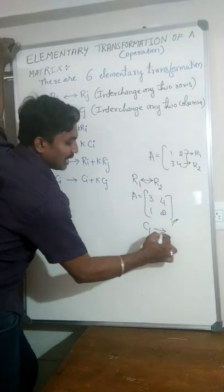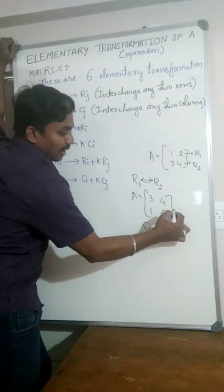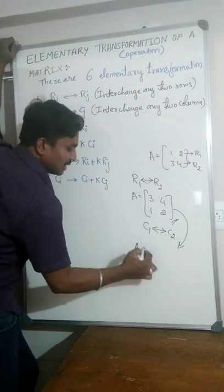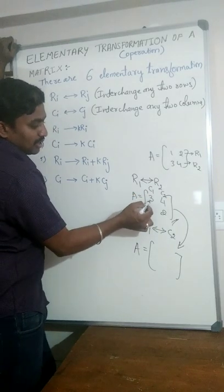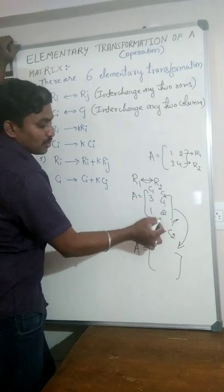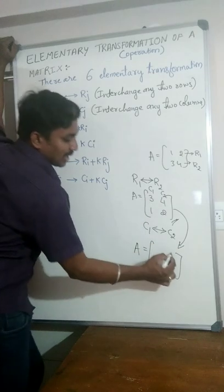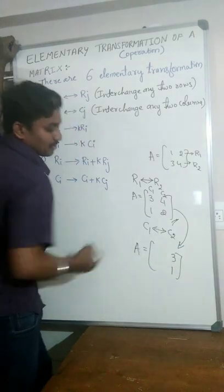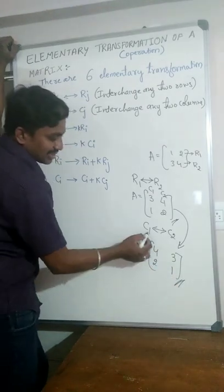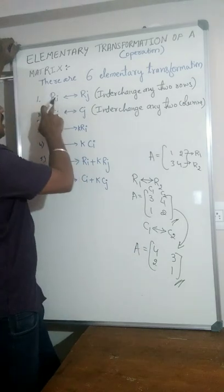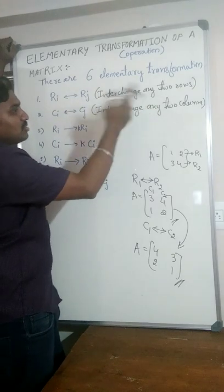Similarly, suppose C1 interchanges C2. If you apply this operation to the same matrix, column 1 elements are 3, 1 and column 2 elements are 4, 2. So C1 interchanged C2 means write the column 1 elements at column 2's place and column 2 elements at column 1's place. This is the resultant matrix for C1 interchanged C2 — that is, interchange of any two rows or columns.